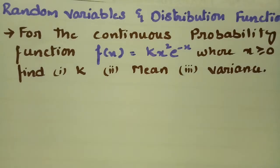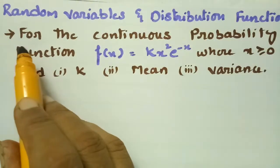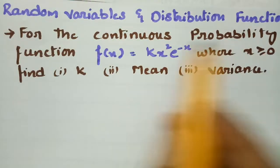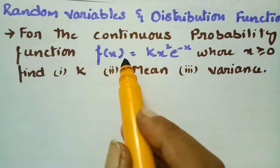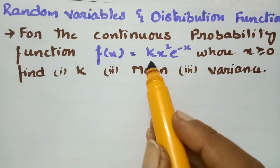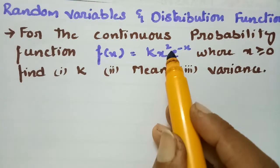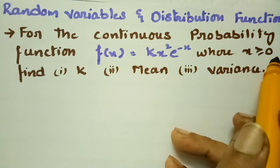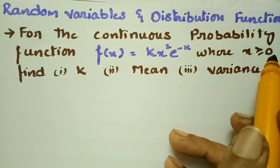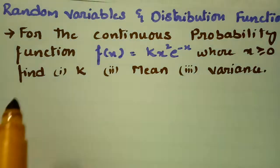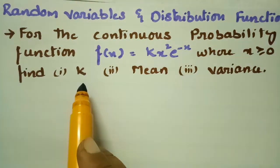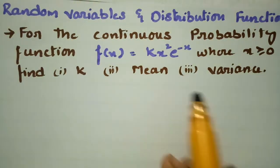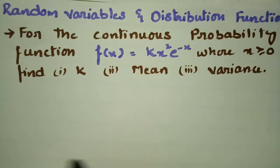Today's problem is from random variables and distribution functions. For a continuous probability function, f(x) = kx²e^(-x), where x ≥ 0. We have to find the value of k, the mean, and the variance.